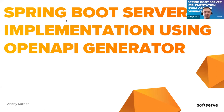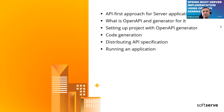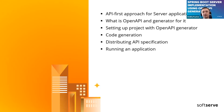So today's agenda: we are going to talk about the API-first approach and why we need it. We'll briefly touch on OpenAPI and the Generator for it. We'll try to set up a project together using the OpenAPI Generator, specifically for Spring Boot. We will see how code generation works, and I'll show you a small trick on how we can make distributing API specifications quite easily. And of course, we will run all of this and see how it works.